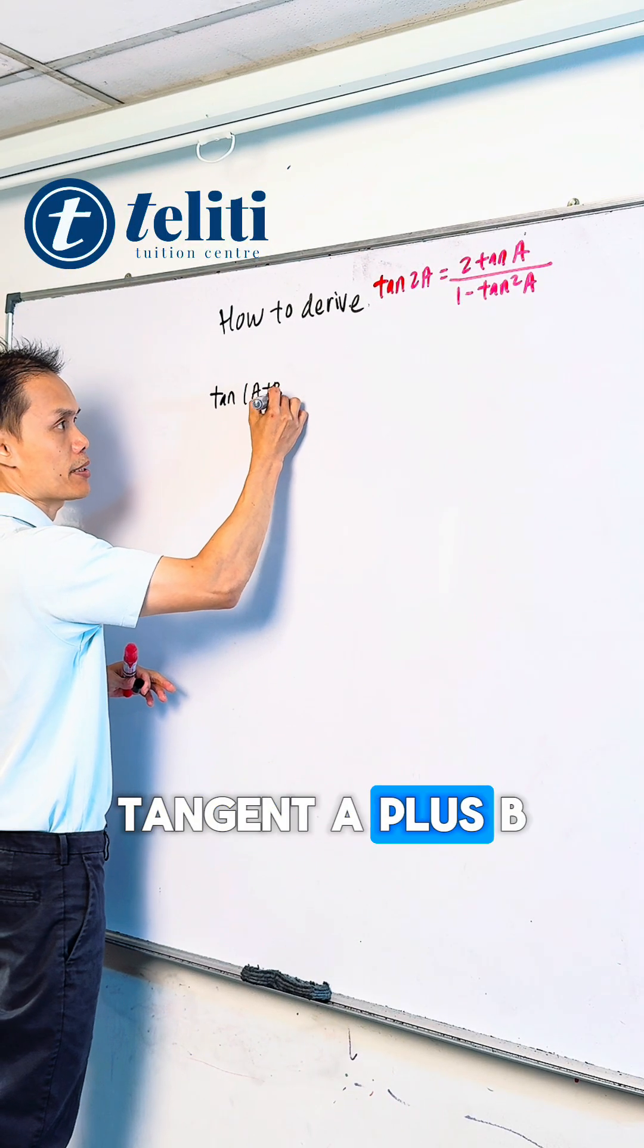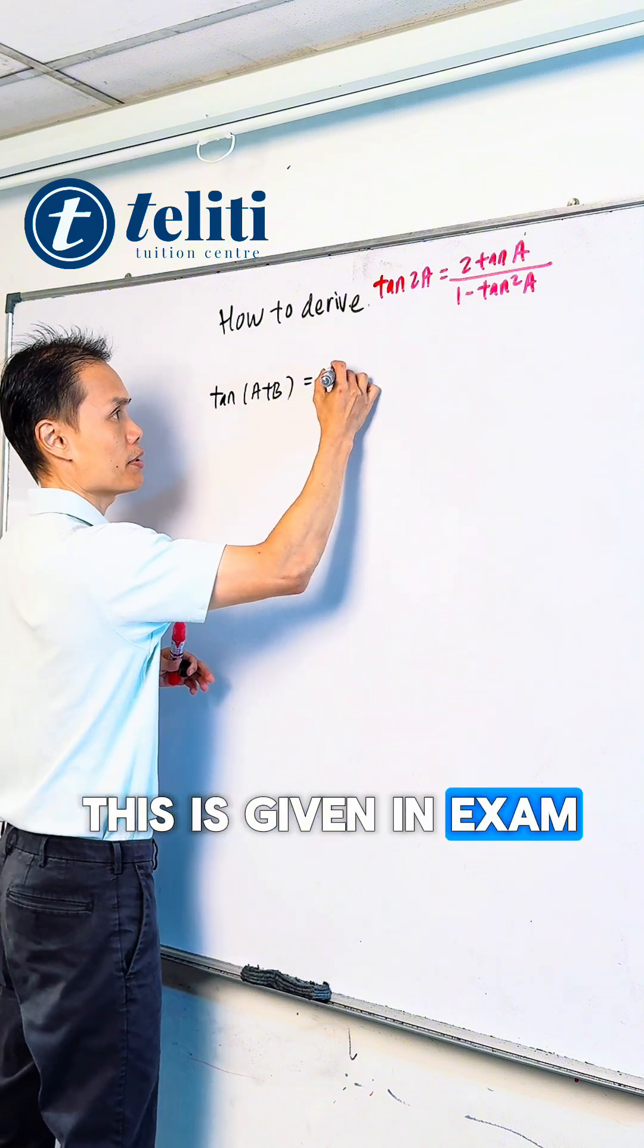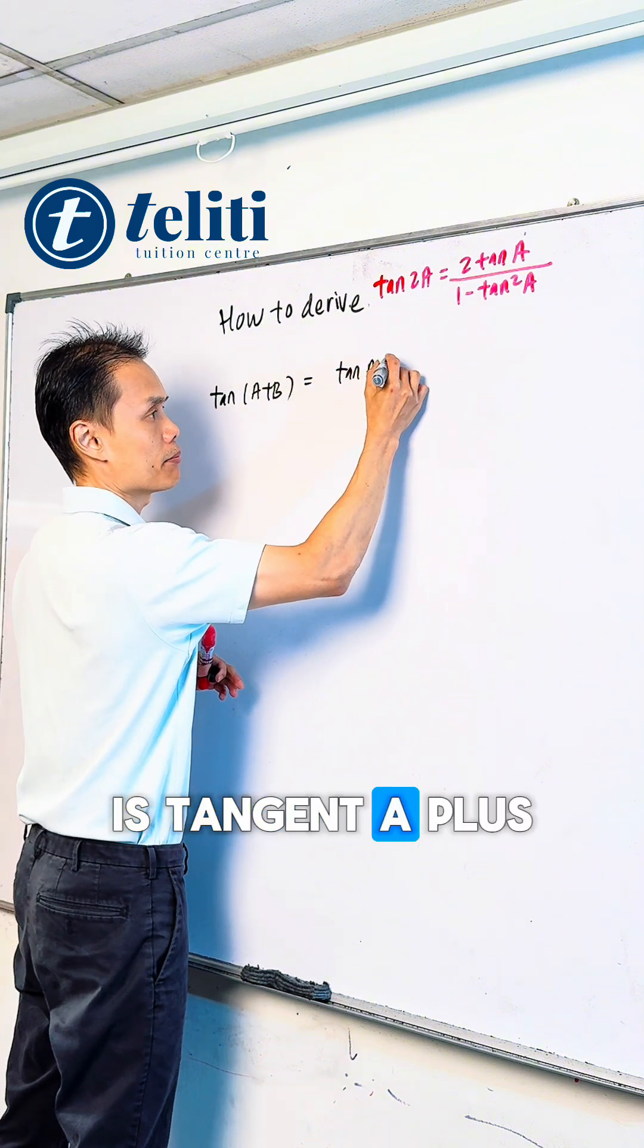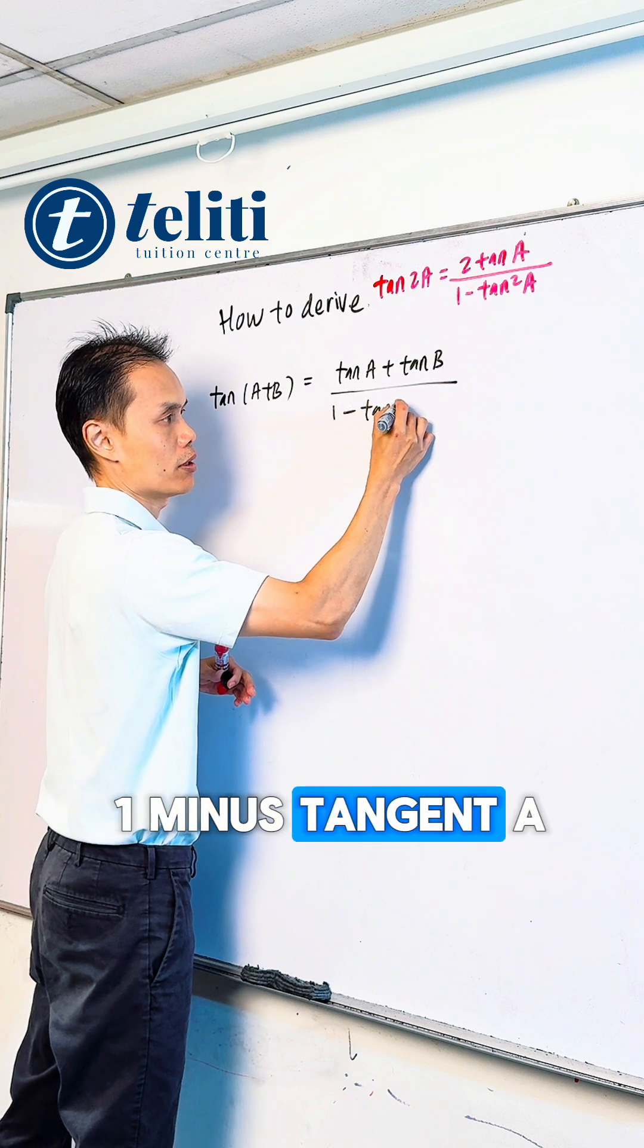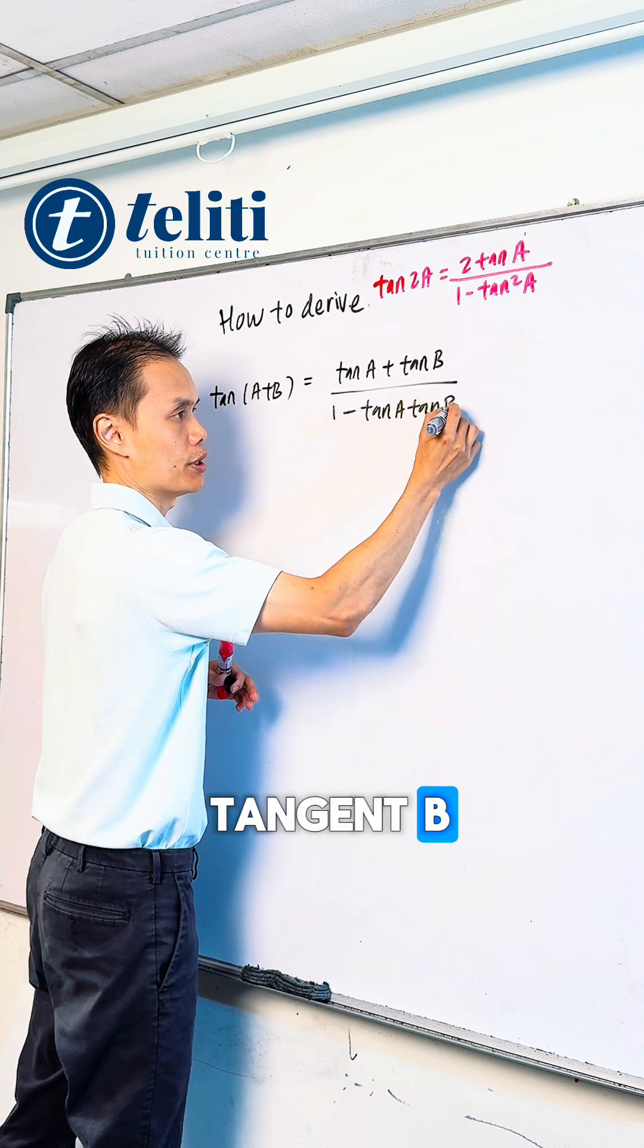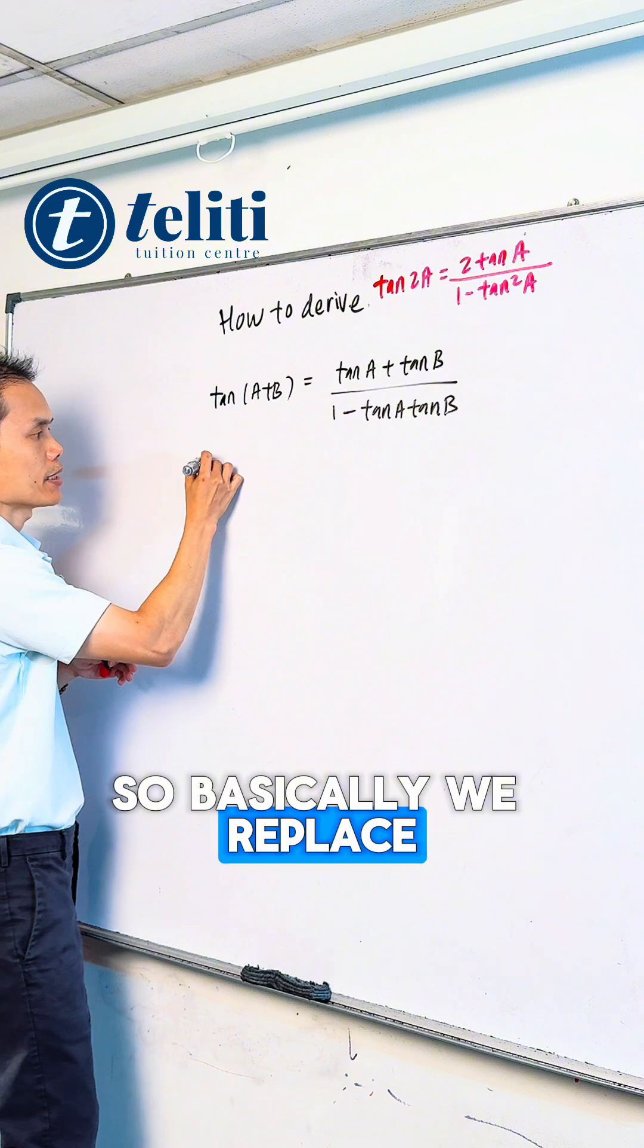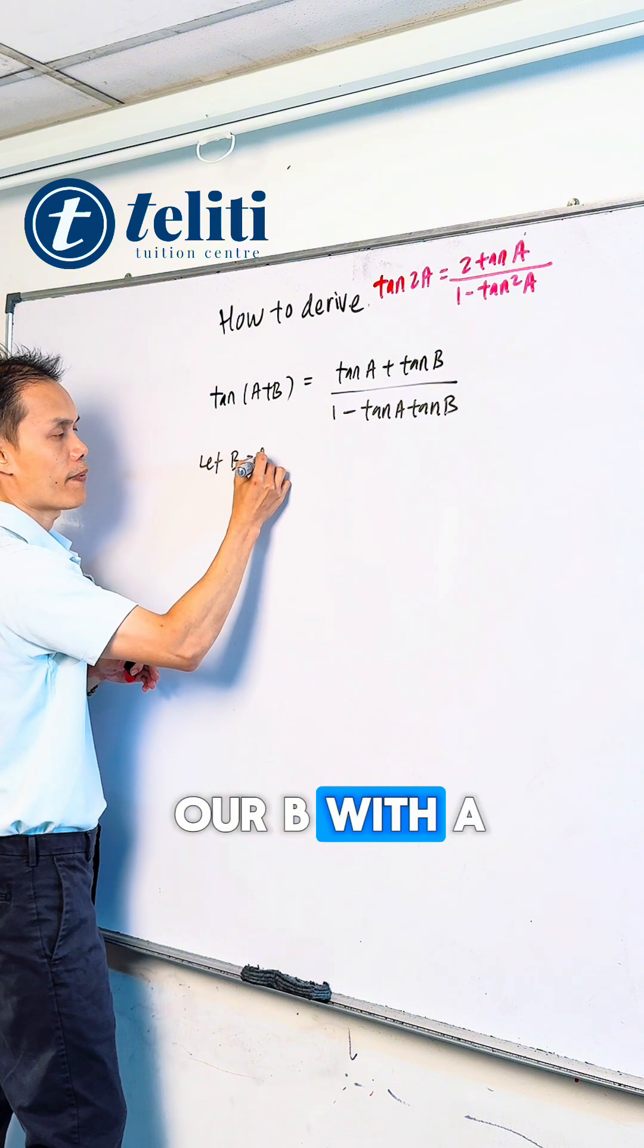tangent A plus B. This is given in exams as tangent A plus tangent B divided by 1 minus tangent A tangent B. So basically we replace B with A.